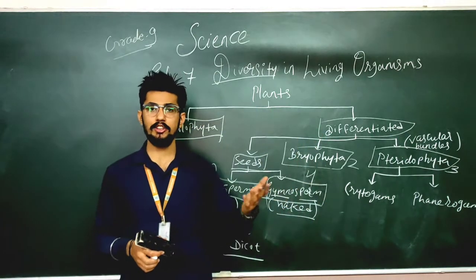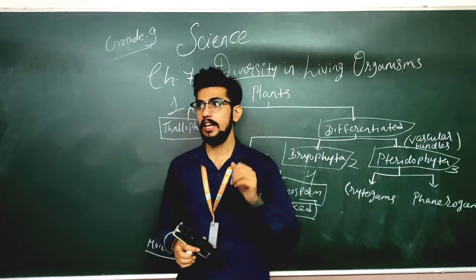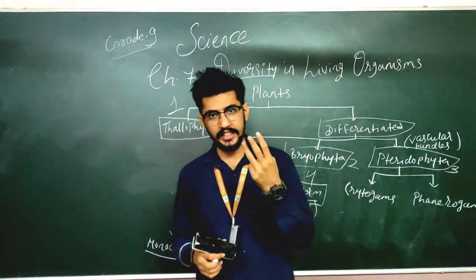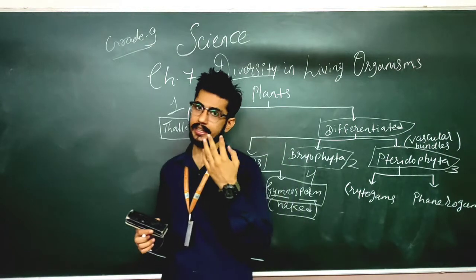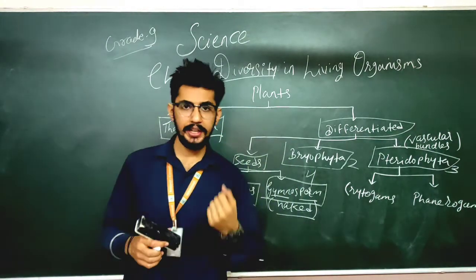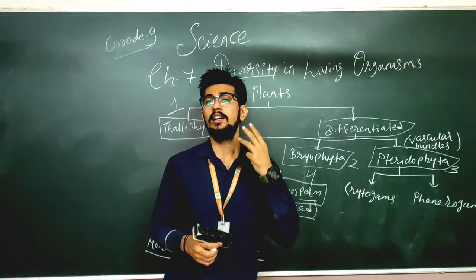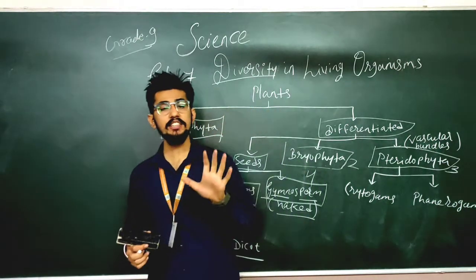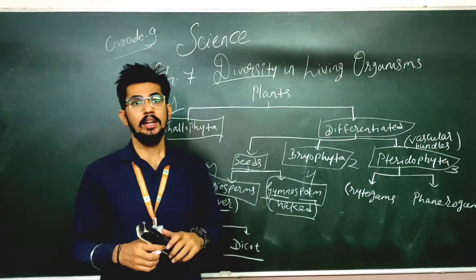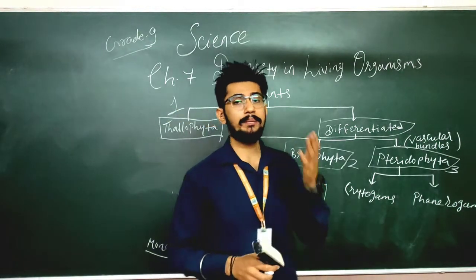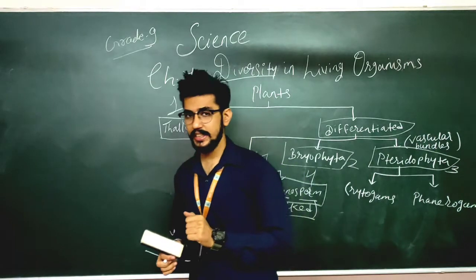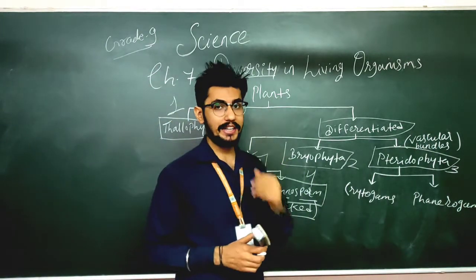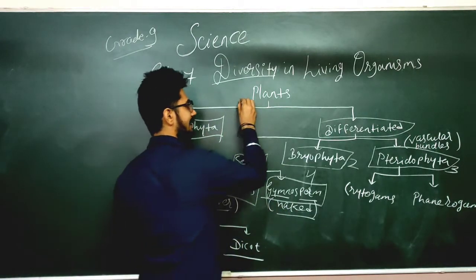These are the five kingdom classifications. In our course, we have five kingdoms, and we have to start with the fourth kingdom, which is Plantae. So we are going to start with the Plantae — the plants.